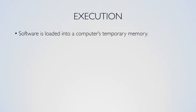Execution. Software is loaded into the computer's temporary memory. Once the software is loaded, a computer is able to execute the software. The process of execution involves a computer carrying out the instructions of the software.